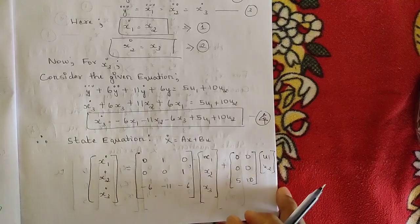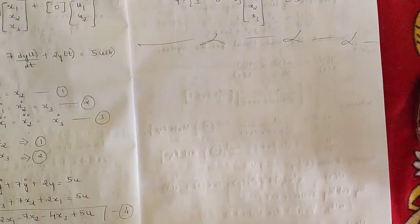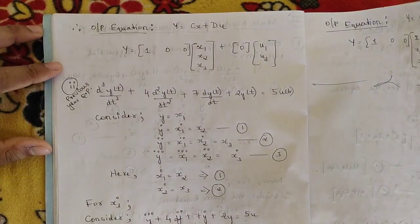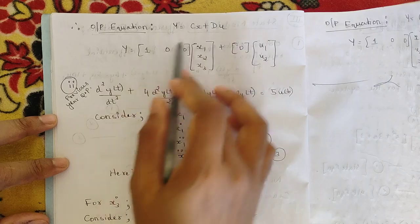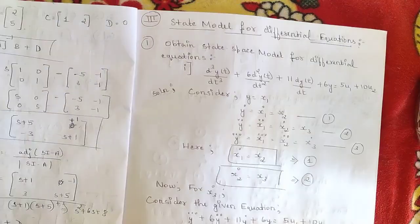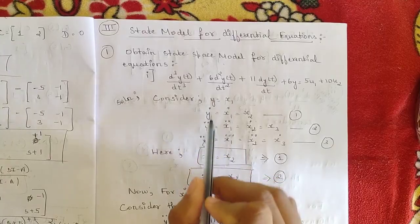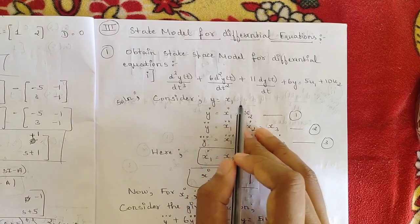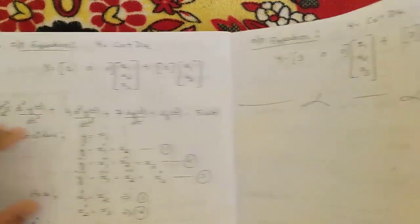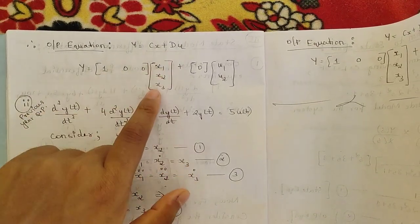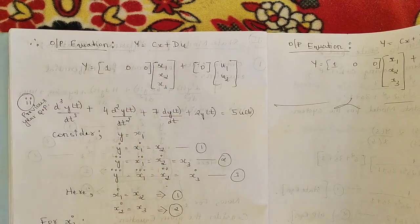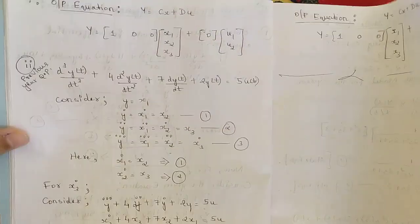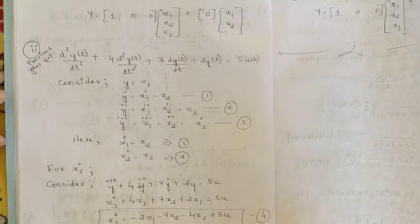The output equation is y = Cx + Du. Since y = x₁, only the coefficient of x₁ is 1 and x₂, x₃ coefficients are 0. So C = [1, 0, 0] and the output equation is y = [1, 0, 0] [x₁, x₂, x₃]ᵀ. The D value is zero since there is no direct u term in the output equation, giving D × [u₁, u₂] = 0.